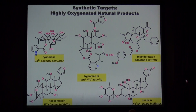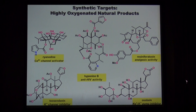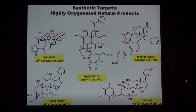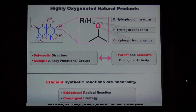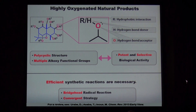Among the natural products, we have been particularly interested in highly oxygenated terpenoids with potent biological activities. I'm showing you some of our target molecules. All of these molecules have different structures and different activities, but they share particular structural features. Carbocycles are multiply fused, and those carbocycles are decorated by multiple oxygen functional groups. Because highly oxygenated natural products often have potent and selective biological activities, efficient synthetic access to these compounds may open up an opportunity for us to study and modulate unknown biological functions.